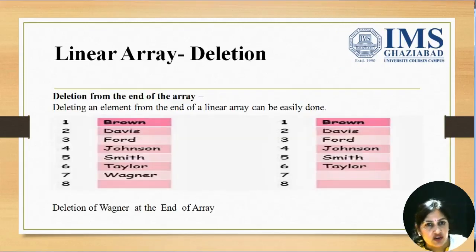Deletion from the end of the array. If we want to delete an element from the end of a linear array, it can be done very easily. We just have to remove the last element of the array. For example, here we have an array with name of the persons. This array contains seven values.